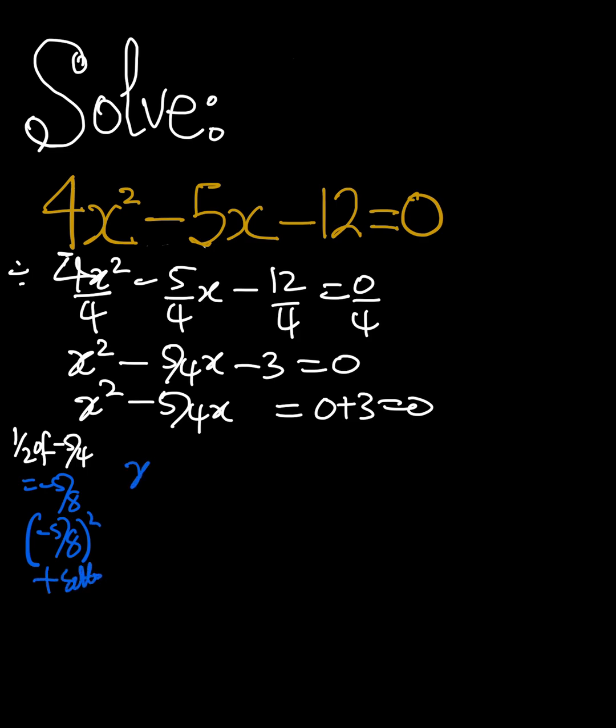So we're going to have x squared minus 5 over 4x plus negative 5 over 8 all squared. It's equal to 3. This is supposed to be 3. It's going to be 3 plus negative 5 over 8 all squared.